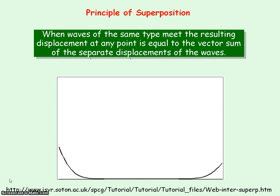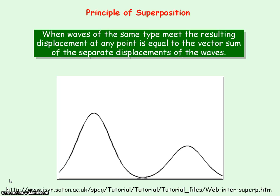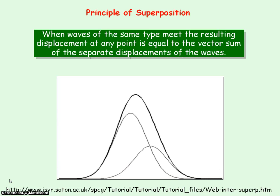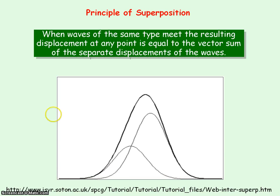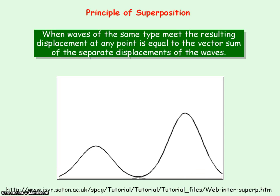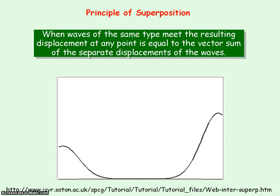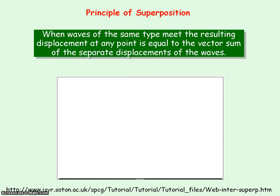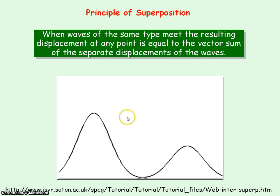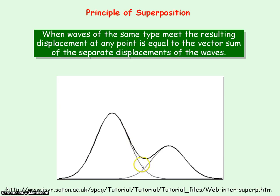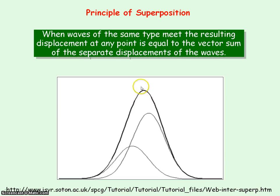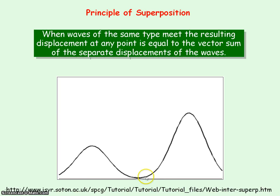This animation is showing two wave pulses moving in opposite directions and meeting. The dark black line is representing the resultant of the two waves, so we're getting a vector addition of the separate displacements.